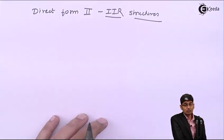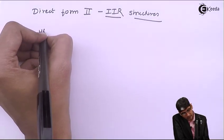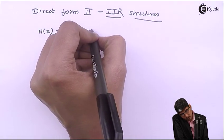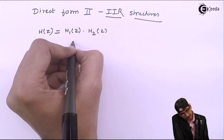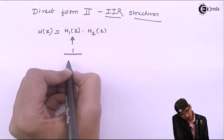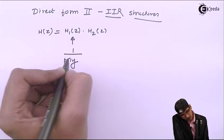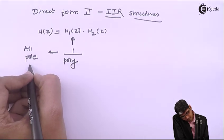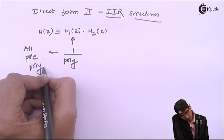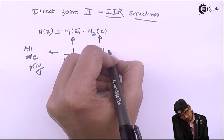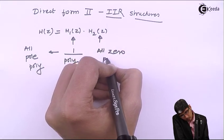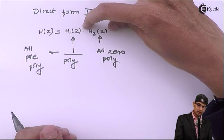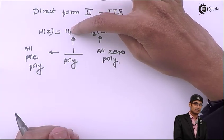For Direct Form 2, H(Z) is split into H1(Z) and H2(Z), but now one term will have 1 upon a polynomial — what we call the all-pole polynomial — and the other will have the all-zero polynomial. This means the numerator stands for H2(Z) and the denominator stands for H1(Z).